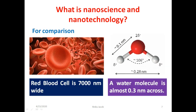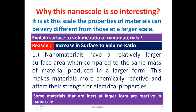The figure shows a comparison of the size and scale of red blood cells with that of a water molecule. The size of red blood cells is in the range of 7000 nanometers compared to a water molecule which has a size of nearly 0.3 nanometers. The reason nanoscale is so interesting is that at this scale, the properties of materials are very different from those seen at large scale.